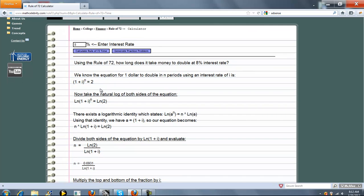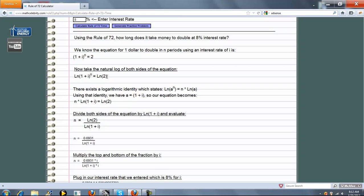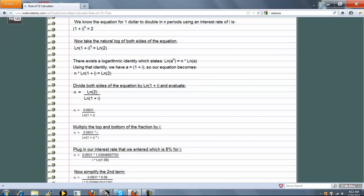Basically, to double an investment, here's the relationship equation where you raise an interest rate and it goes to 2. We're going to solve for n - how long does that take? We take the natural log of both sides, use some logarithmic identities, and simplify.